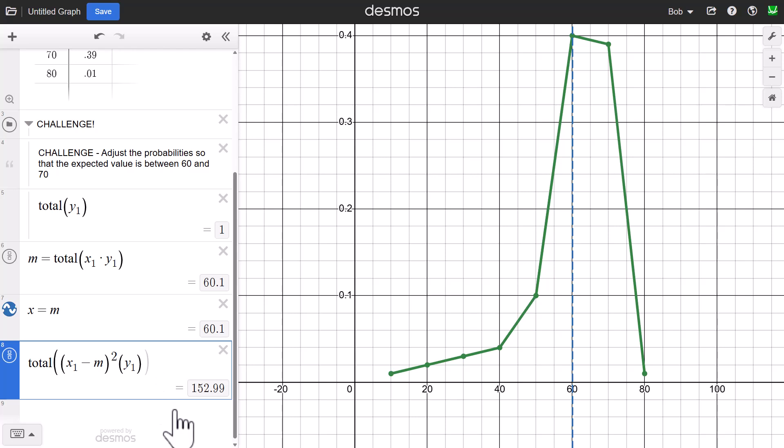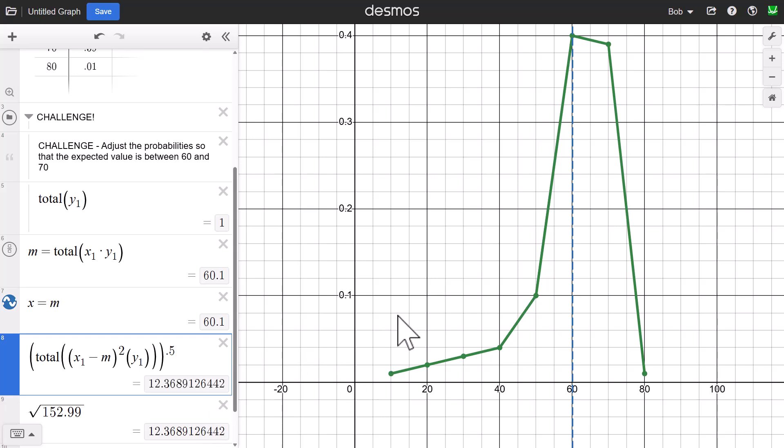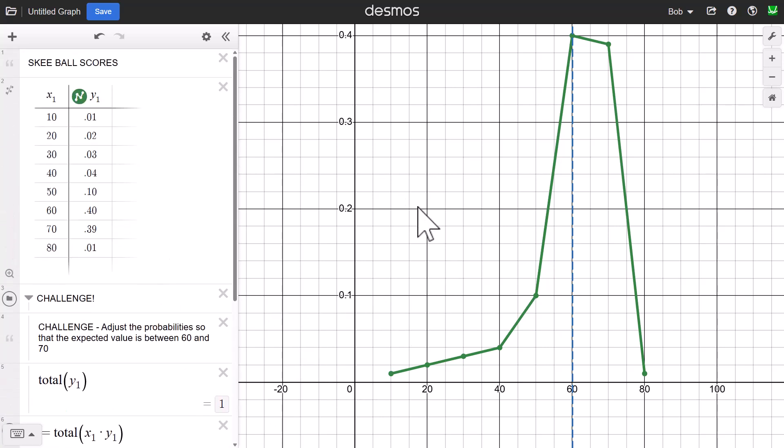I would like the square root of that. There's a couple things I could do. I could do the square root of 152.99, or I could just raise this to the 0.5 power if I wanted to as well, and I would get 12.37. So mean and standard deviation of discrete probability distribution, you can do it, but also use the opportunity to think about how to involve students in the process.